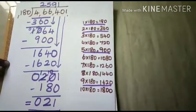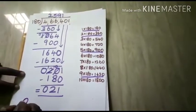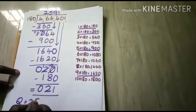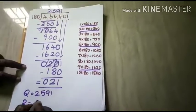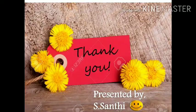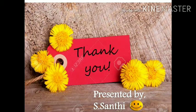So this is your answer. What is your quotient? 2591. And your remainder is 21. Thank you children, hope you enjoyed. Bye bye.